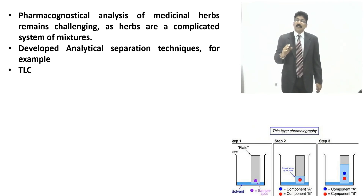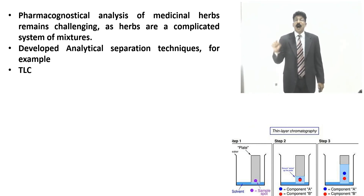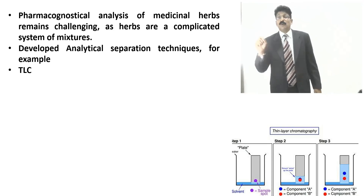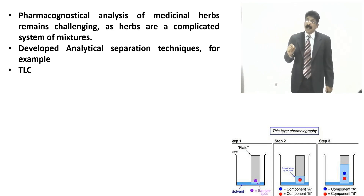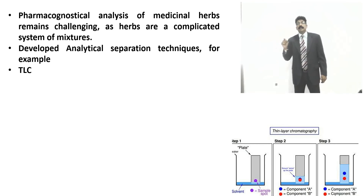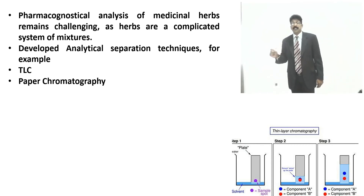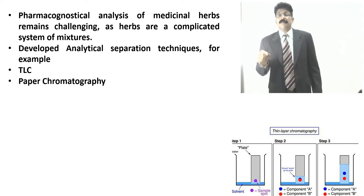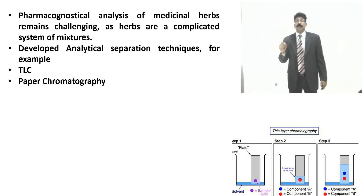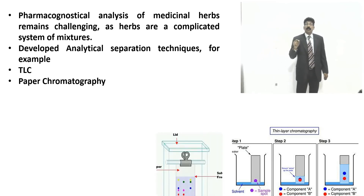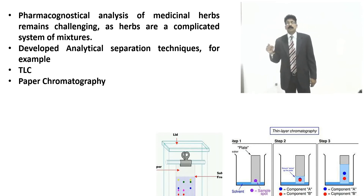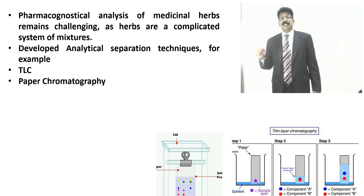When we talk about application, it is not only sufficient to know that a technique can be used for isolation — you should know how to perform it, how to do it, and what the basic principle behind the technique is. Paper chromatography is also one technique which is applied for various herbal drug technology and herbal drug standardization, and there are many types which we have studied and done in the lab.